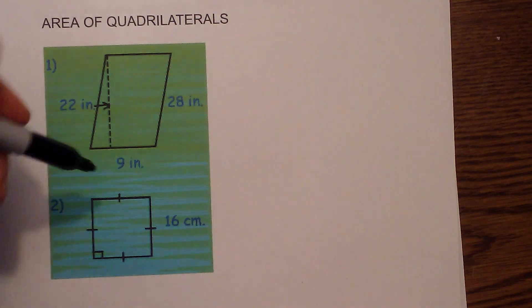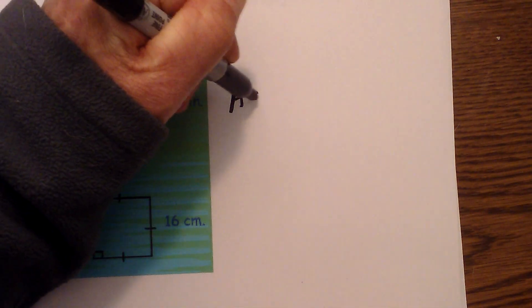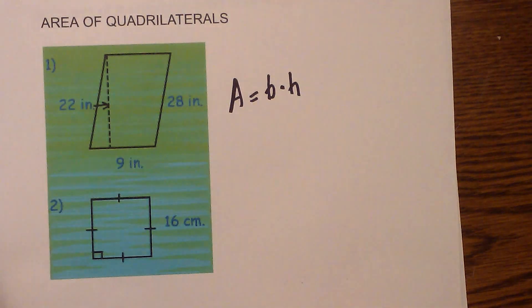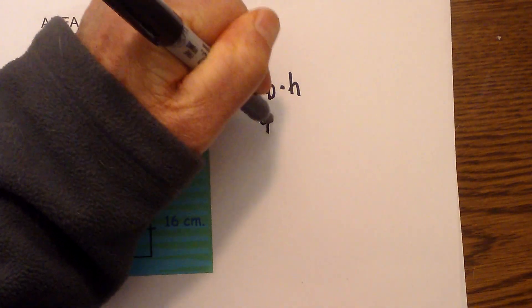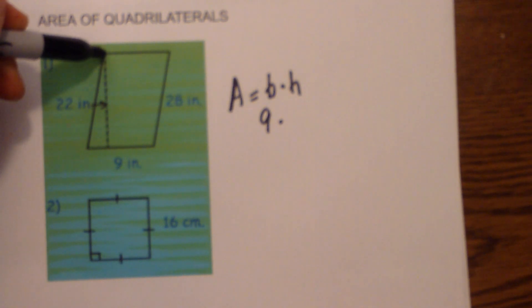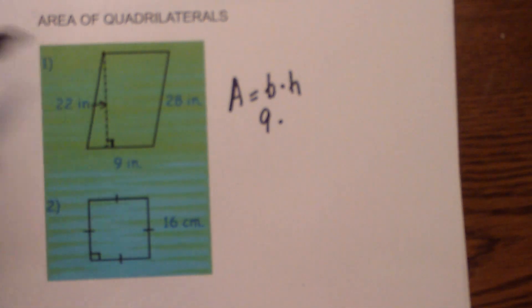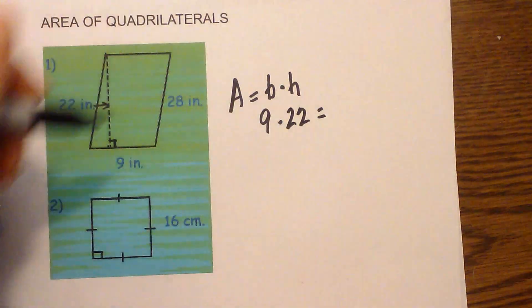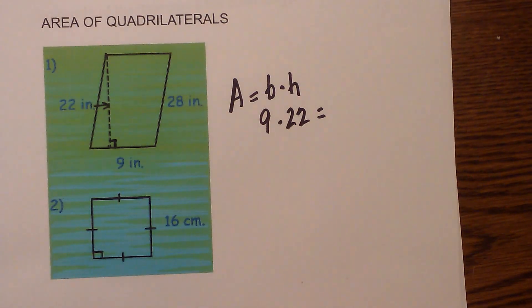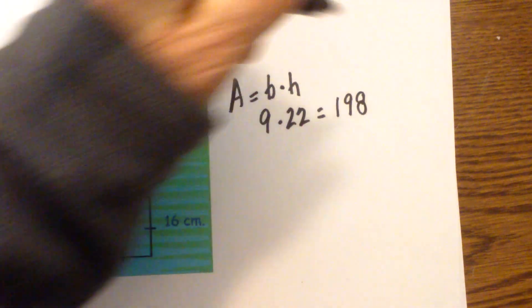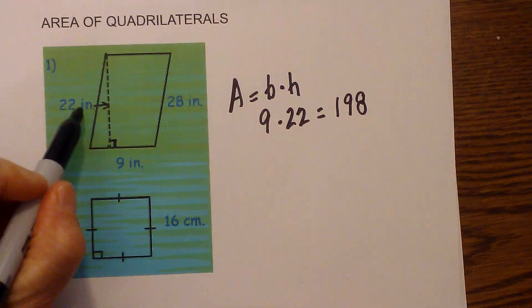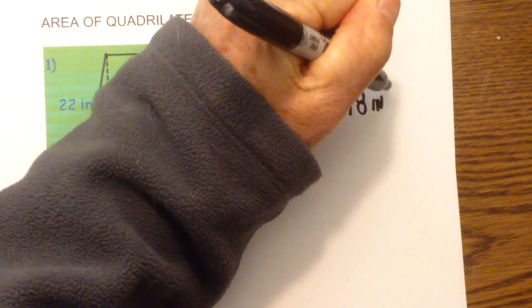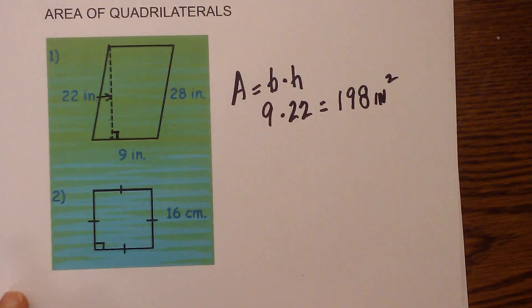So what we need to do in order to solve this we have area equals base times height. The base is 9 inches and the height, remember, must be a perpendicular line. It has a dotted line or it may have something in the corner and that is 22 inches. So it will be 9 times 22 and then if you take 9 times 22 that equals 198. And we need to label it properly and it is in inches so it will be inches squared. So there is the first one.